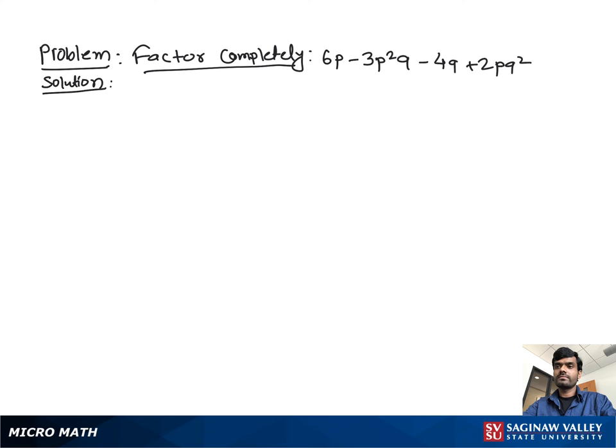Factor completely: 6p minus 3p squared q minus 4q plus 2pq squared. As you see, there is no common factor shared and there are no like terms, so you can't add or subtract. When you see this kind of condition, we solve this by grouping.